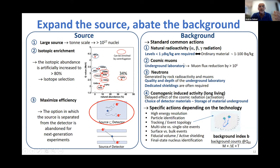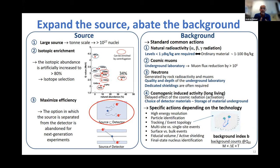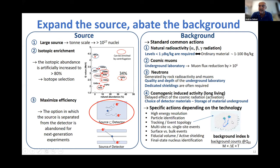Additional control of cosmogenic-induced activity is required. Technology-specific background rejection methods include: high energy resolution to reduce the background window, particle identification, tracking, event topology discrimination (multi-site vs. single-site events, surface vs. bulk events), fiducial volume selection, active shielding, and final-state nucleus identification. These tools can be used simultaneously or characterize particular experiments and technologies. A useful figure of merit is the background index — counts in the region of interest per unit detector mass, energy, and measuring time.